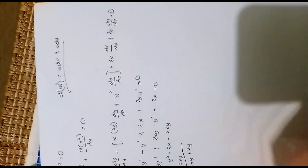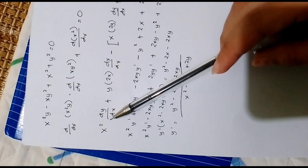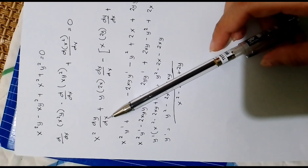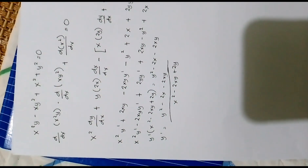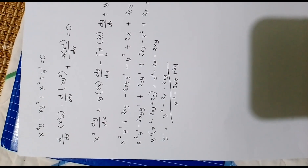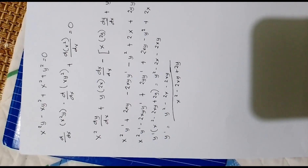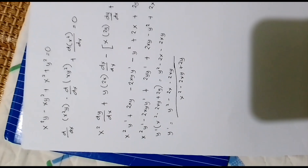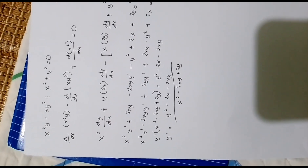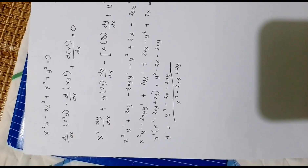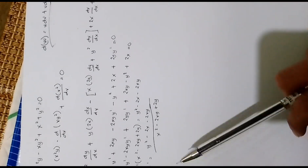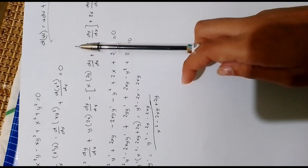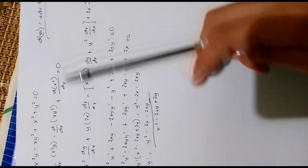Applying the product rule: copy x squared, differentiate y, so dy with respect to x — that gives x squared y prime. Then plus copy y, differentiate x squared, so that is 2x. Then minus: copy x, differentiate y squared, so that is 2y times dy with respect to x, giving 2xy prime.